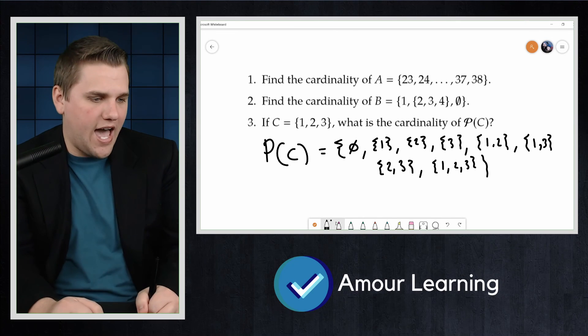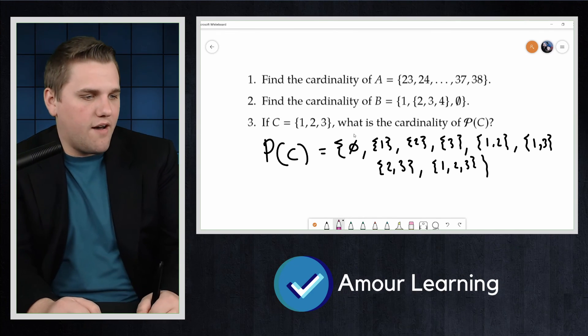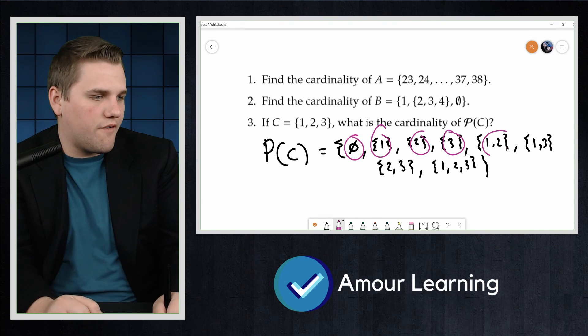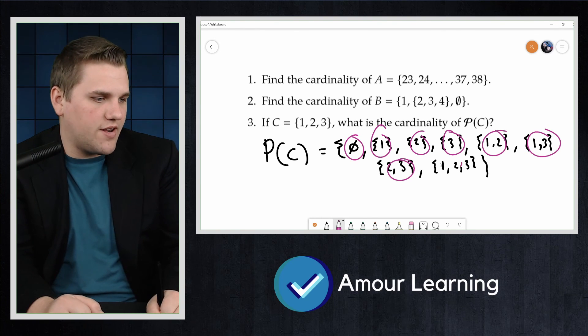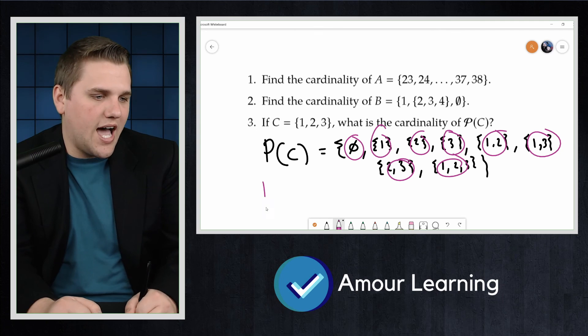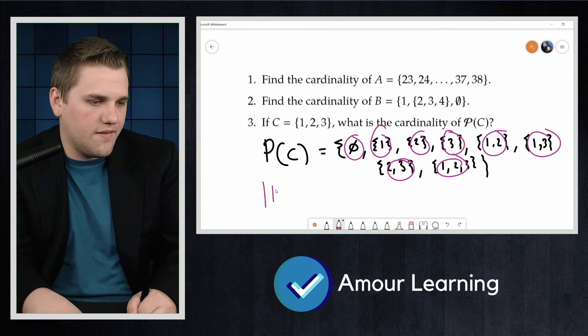So how many elements do we have here? Well, we have 1, 2, 3, 4, 5, 6, 7, 8. So the size of the power set of C is 8.